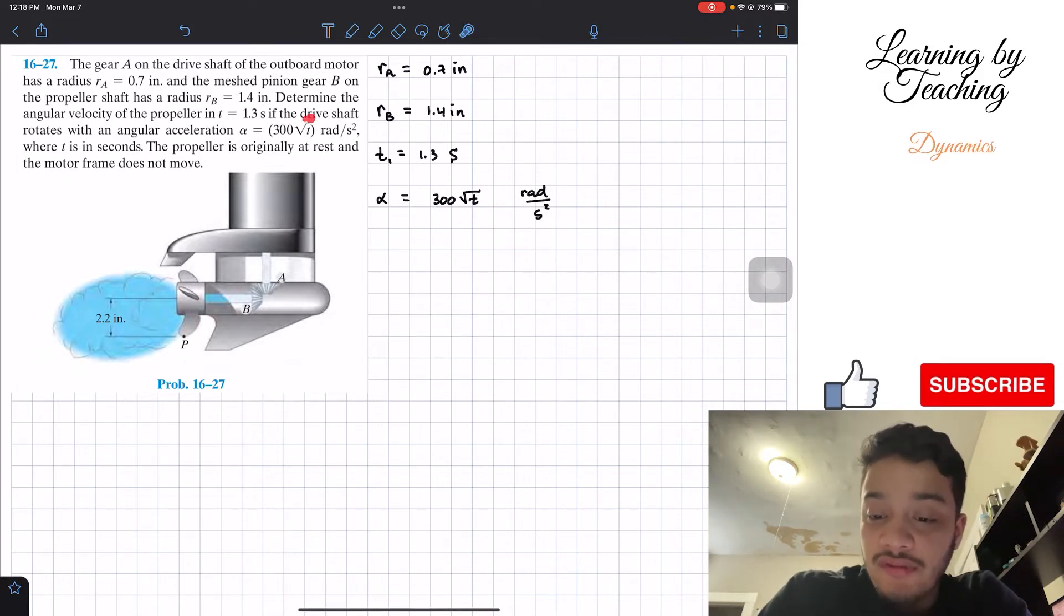Now, this acceleration is for the drive shaft that rotates with an angular acceleration. The drive shaft is basically my gear A, so I'm going to give it a subscript of A. This is my angular acceleration for my gear A.